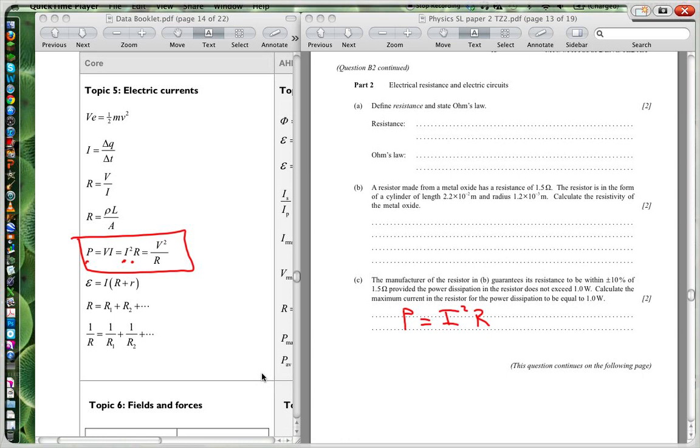So I'm going to use that formula that power is equal to I squared R. And I'm wanting to know what my current is. So I is going to equal the square root of power over R.